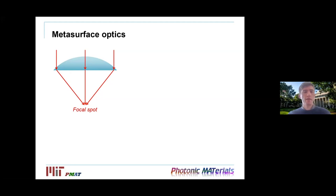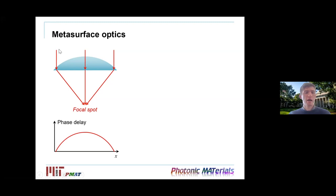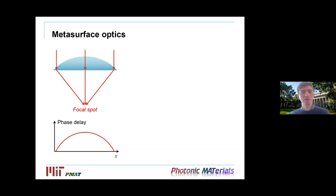Traditionally, a lens transforms an incident wave into a spherical wave that converges to a point. Going deeper into the mechanism, each ray acquires a certain phase related to the optical path through the material. The central ray acquires a larger phase delay and the edge rays a smaller one, resulting in a phase delay distribution imprinted on the incident electromagnetic wave profile.